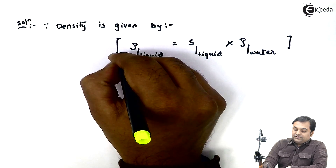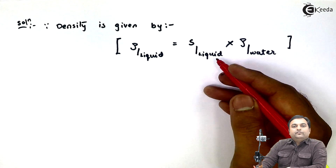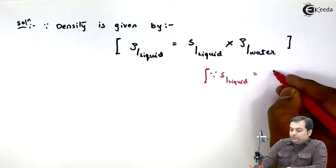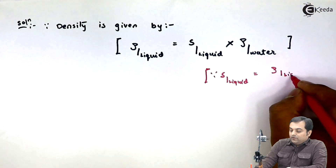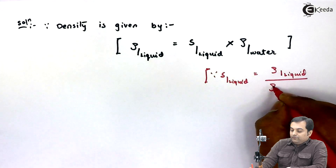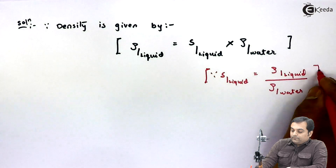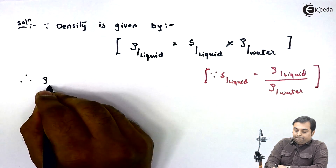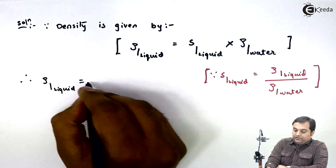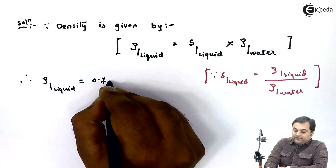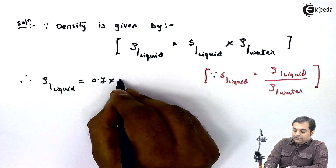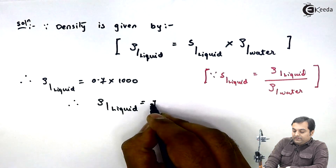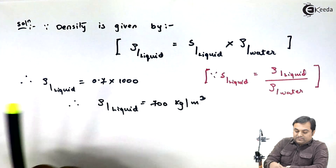This relation comes from the formula of specific gravity: specific gravity of any liquid equals the density of that liquid divided by the density of water. So density of liquid equals specific gravity of liquid (which is 0.7) multiplied by the mass density of water (1000 kg/m³). Therefore, the density of the liquid comes out to be 700 kg per meter cube. This is my first answer.